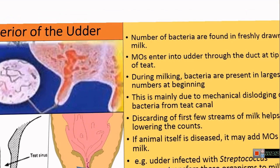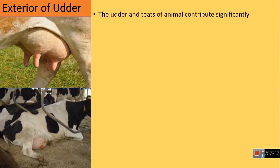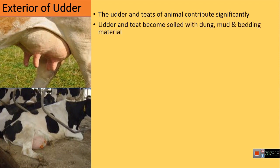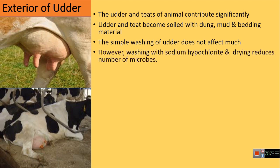Like the interior, the exterior of the udder and teat also contributes significantly to microorganisms in the milk. The udder and teat always get soiled with dung, mud, and bedding material like sawdust and straw. Simple washing of the udder does not affect the microflora; however, washing with sodium hypochlorite followed by drying helps in reducing the number of microorganisms.